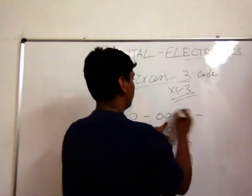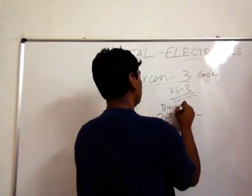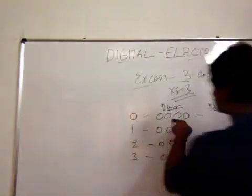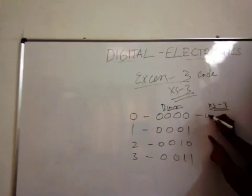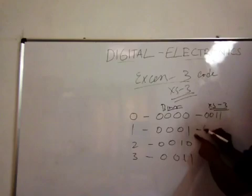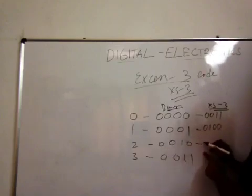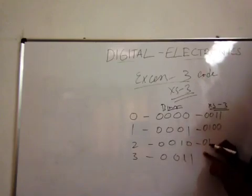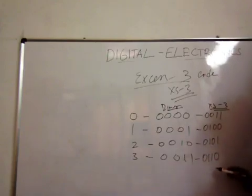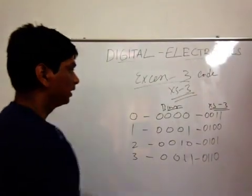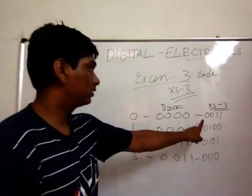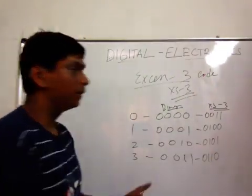So this is the normal binary code and this is the XS3 code. In XS3 code, the code for zero is going to be 0011, for one it is 0100, and so on. When writing the code for zero, you are actually adding three to zero, which gives three — represented as 0011 in binary.